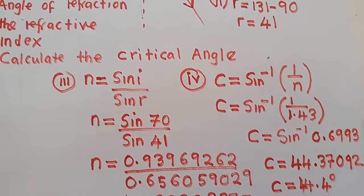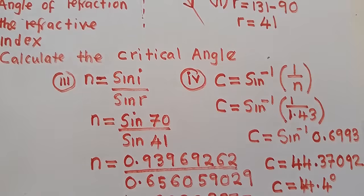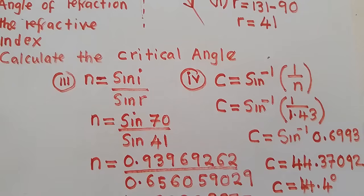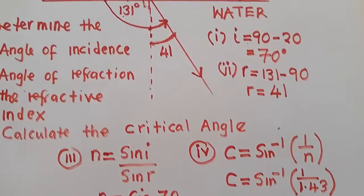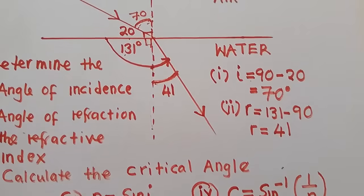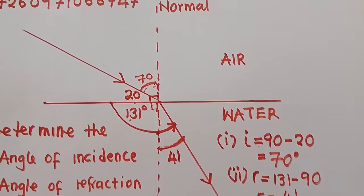So 44.4 degrees is our critical angle. This is how you answer this question — these are the steps to follow. This question comes in your exams, so make sure you revise and understand all the concepts illustrated, and know all these calculations.